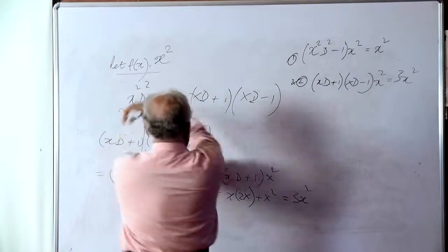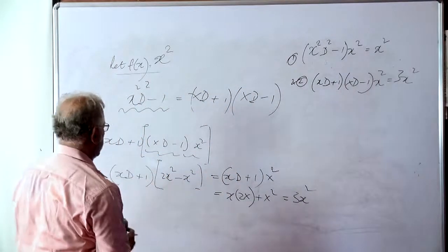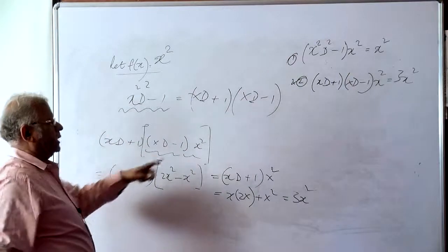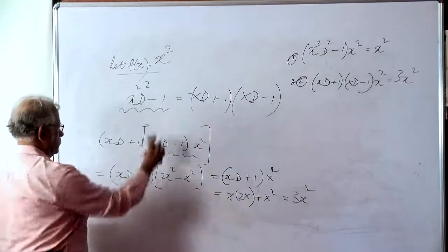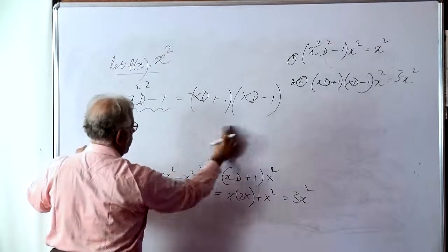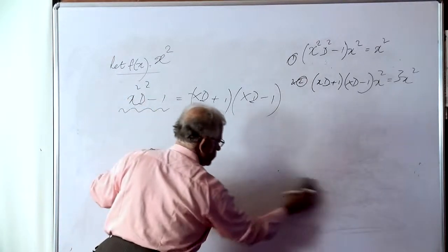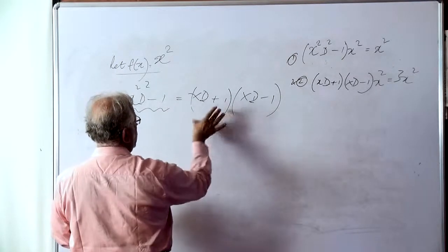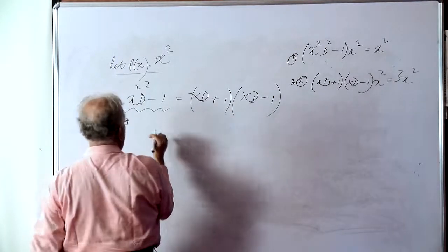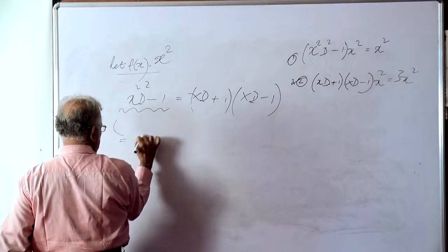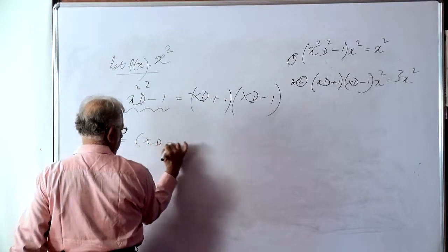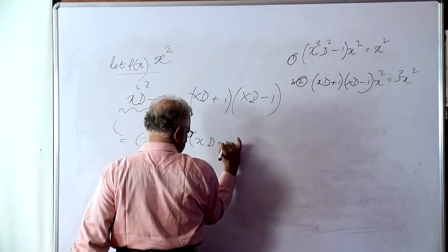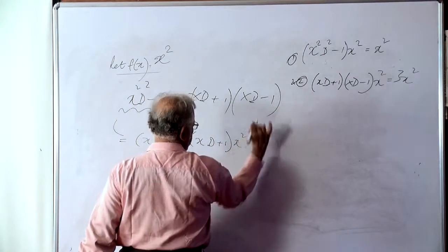Now, let's reverse the order of the factors. In other words, let us write x squared d² minus 1 is (xd minus 1) into (xd plus 1). That means we assume that this is a commutative law following. So this is equal to (xd minus 1) into (xd plus 1) operating on x squared.